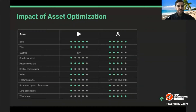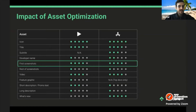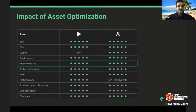Here's an overview of the different assets in the Play Store and App Store, and the impact of optimizing each. Basically, the more visible an asset is, the more potential you have to increase conversion rates by optimizing it. Looking at the screenshot section, these are pretty valuable — especially the first few screenshots. As you get into later screenshots, the percentage of people who scroll all the way to the end is much lower.